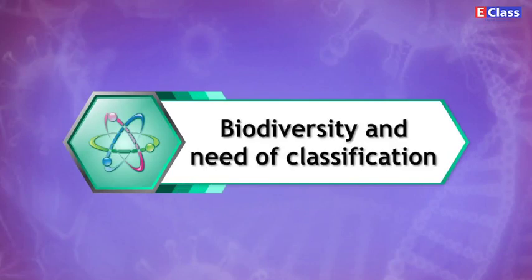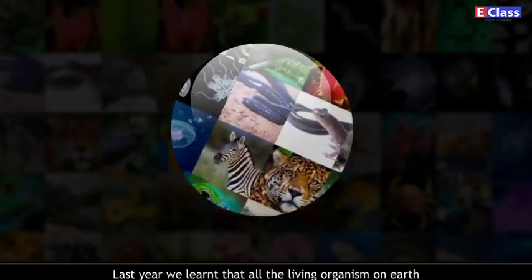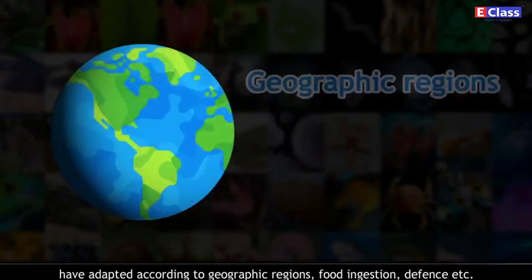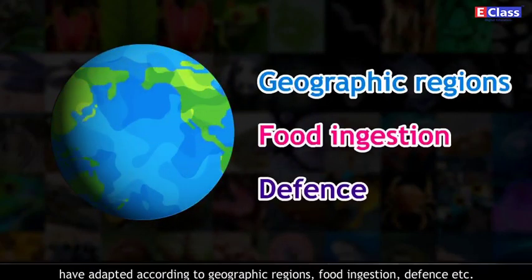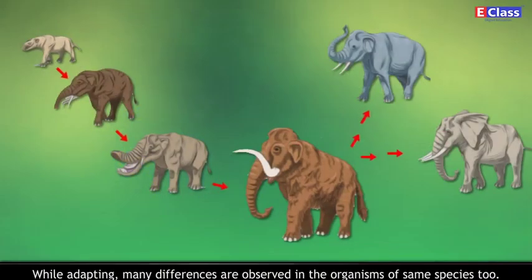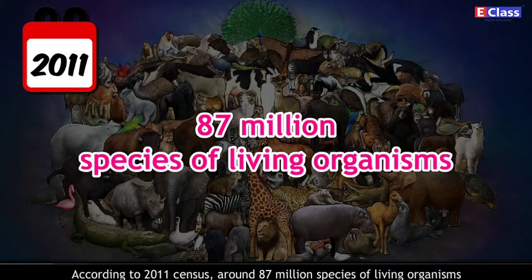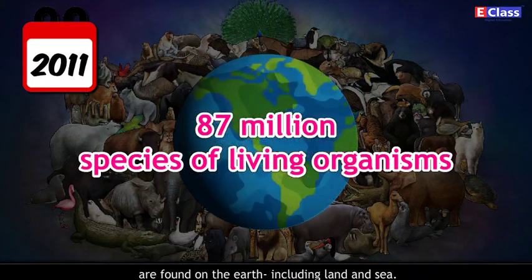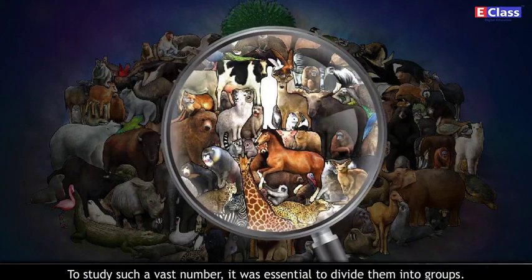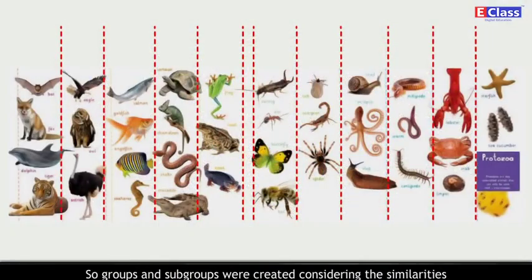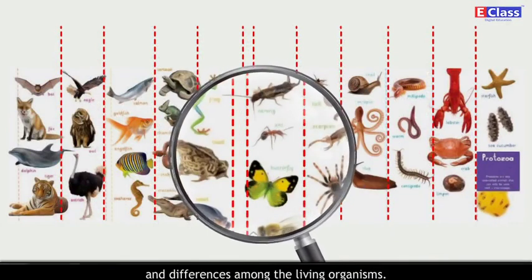Biodiversity and Need of Classification. Last year we learned that all the living organisms on Earth have adapted according to geographic regions, food ingestion, defense, etc. While adapting, many differences are observed in the organisms of the same species too. According to the 2011 census, around 87 million species of living organisms are found on the Earth, including land and sea. To study such a vast number, it was essential to divide them into groups, so groups and subgroups were created considering the similarities and differences among living organisms.